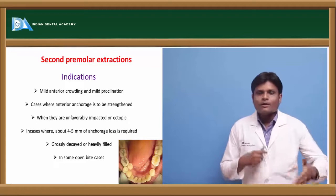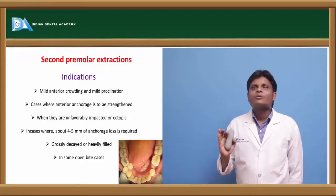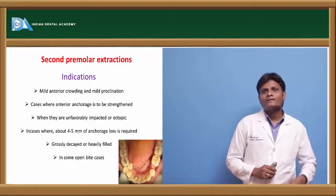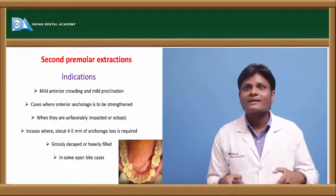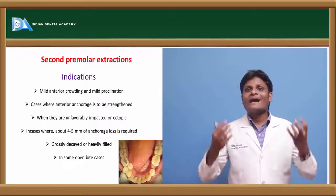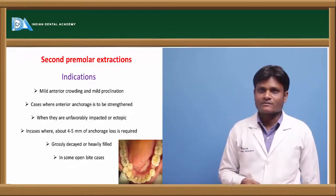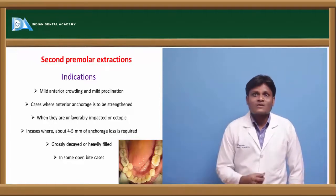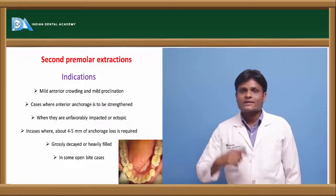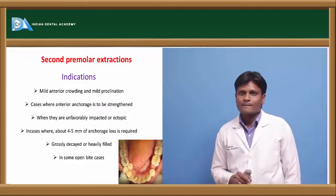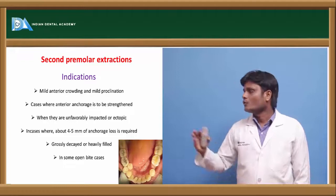Sometimes we need to go for second premolar extractions — in mild anterior crowding and mild proclination cases. Also, in cases where the anterior anchorage has to be strengthened, we go for second premolar extraction so that the anterior segment carries six anterior teeth along with the two premolars, giving good anterior anchorage. This allows easy mesialization of the posterior segment, as required in mild crowding and mild proclination. When the second premolars are grossly decayed or heavily filled and space is needed, we extract the unhealthy second premolar rather than a healthier first premolar.